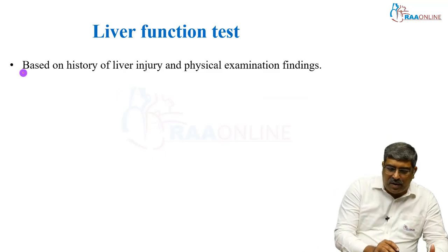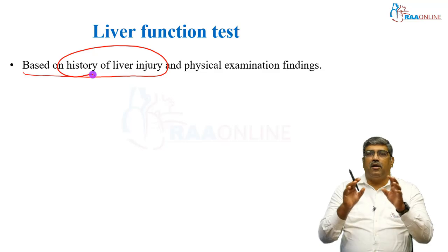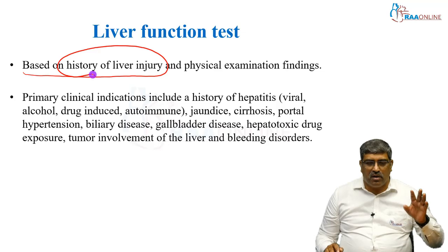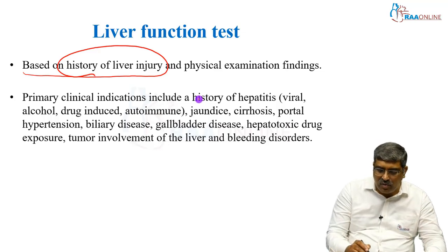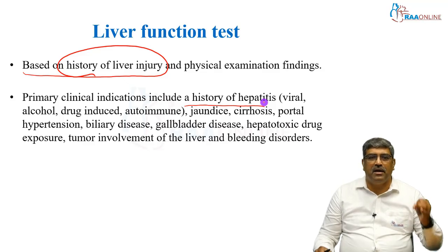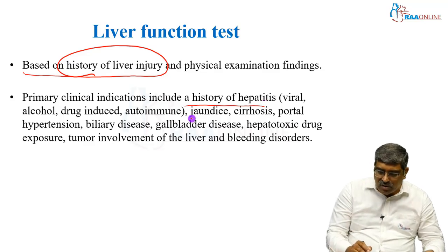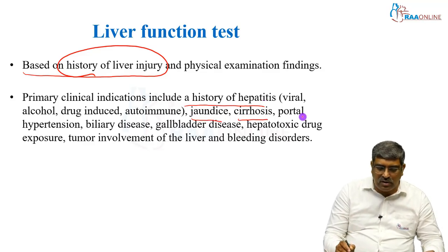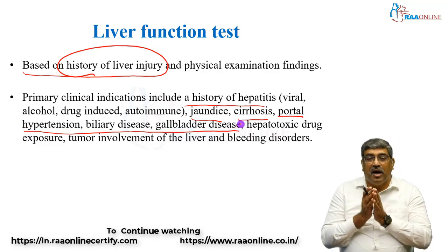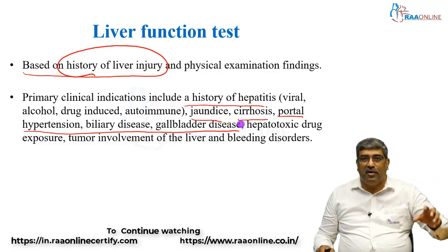Liver function test is requested based on history of liver injury and systemic examination findings. The primary indications include history of hepatitis — which can be viral, alcoholic, drug-induced, or autoimmune — jaundice, cirrhosis, portal hypertension, biliary disease, gallbladder disease, hepatotoxic drug exposure, tumor involvement of the liver, and bleeding.